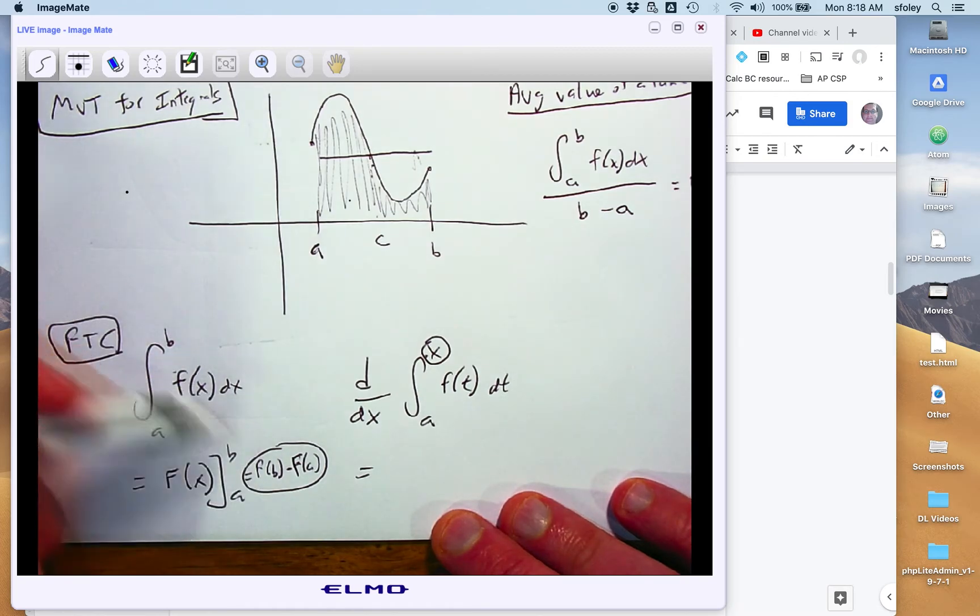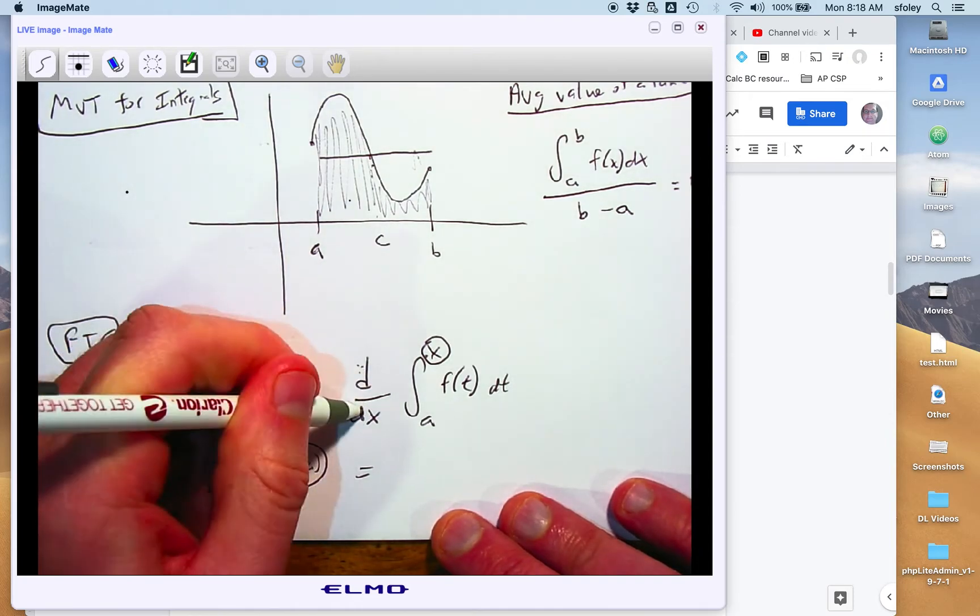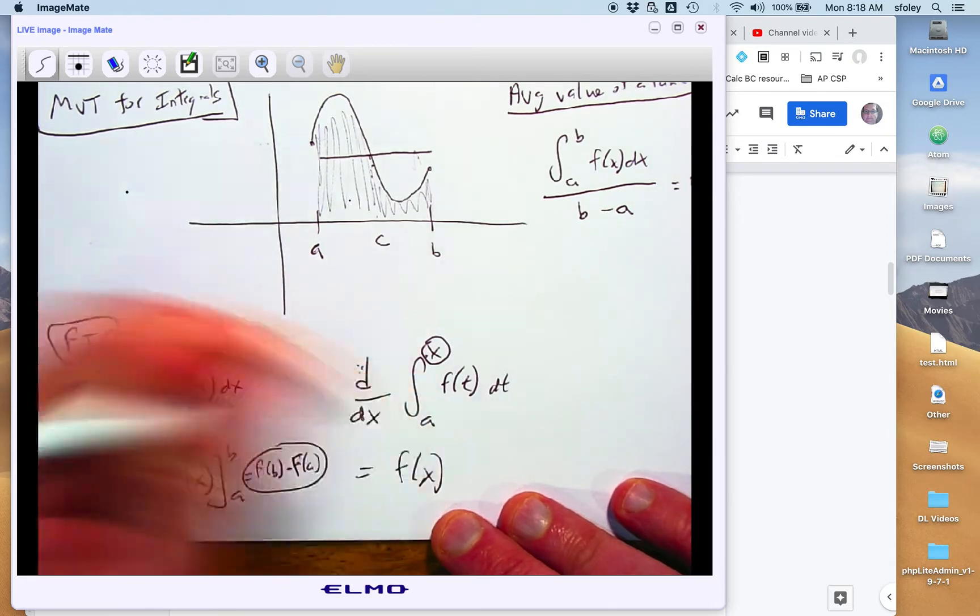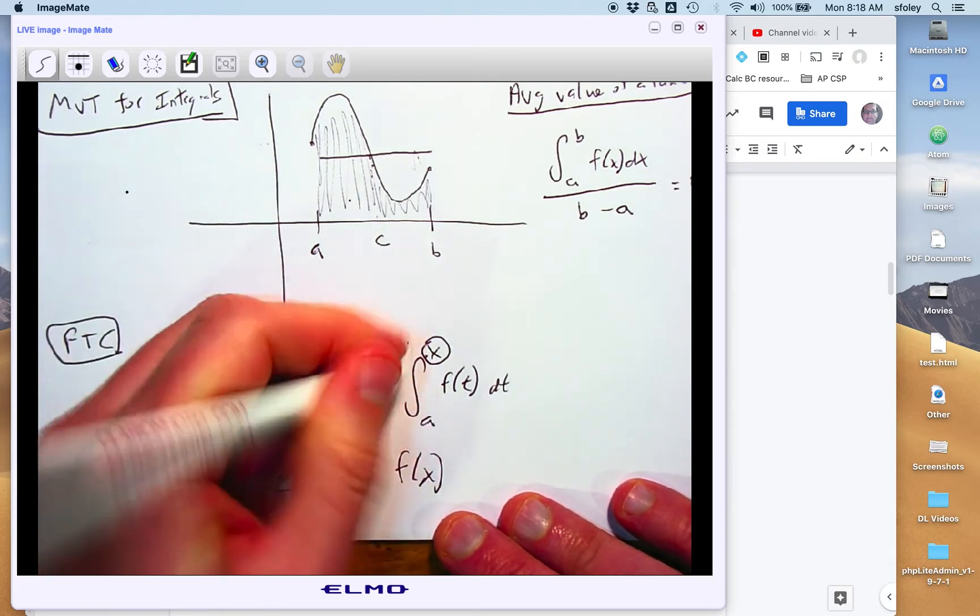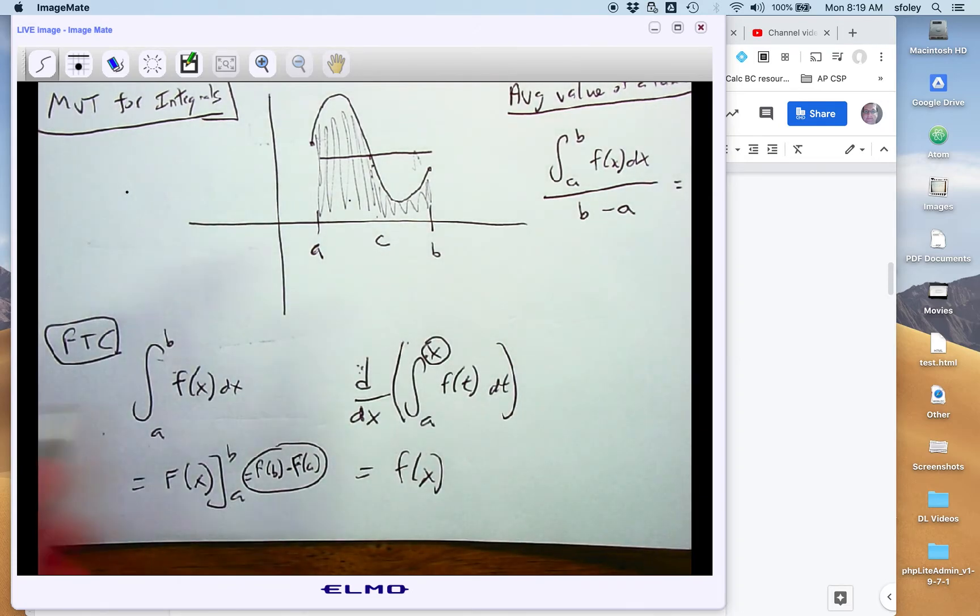Derivatives and antiderivatives, derivatives and definite integrals, sort of inverses of one another. They're going to cancel each other out. And so when you take the derivative of this area function, you just get that inside function back. The derivative and the integral cancel each other out. And so they really like this.